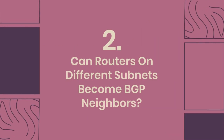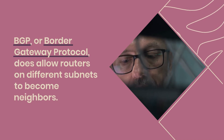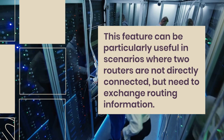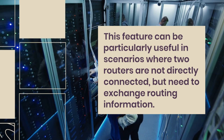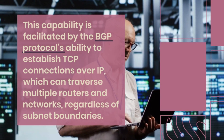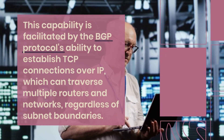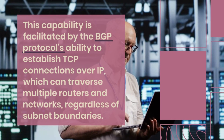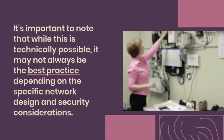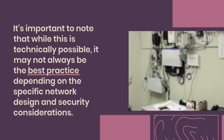Can routers on different subnets become BGP neighbors? BGP does allow routers on different subnets to become neighbors. This feature is useful in scenarios where two routers are not directly connected but need to exchange routing information. This capability is facilitated by BGP's ability to establish TCP connections over IP, which can traverse multiple routers and networks regardless of subnet boundaries. It may not always be best practice depending on network design and security considerations.